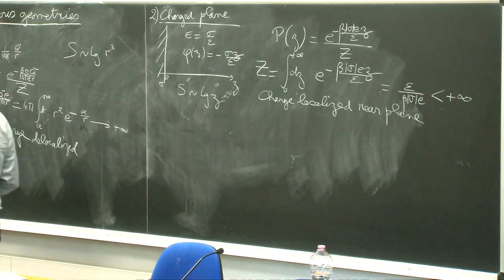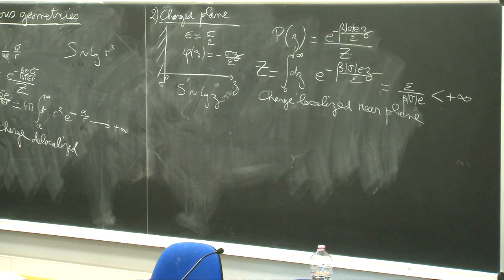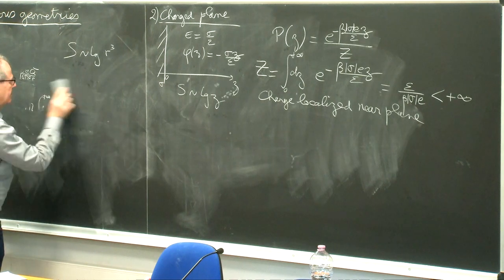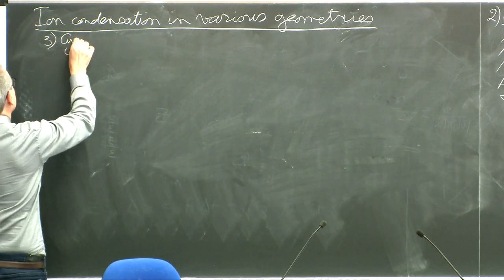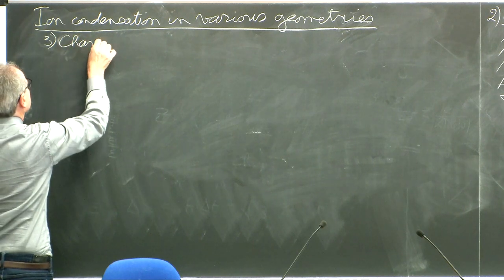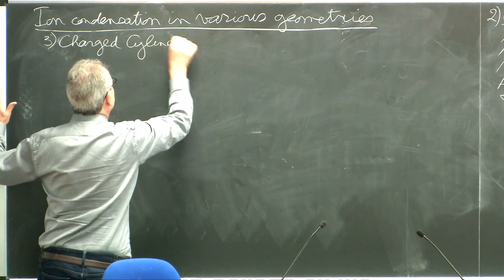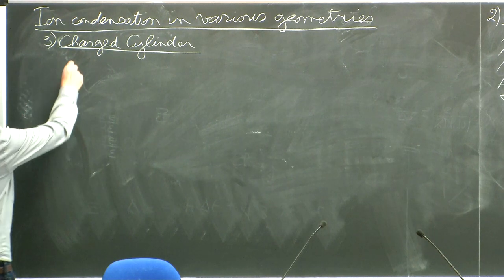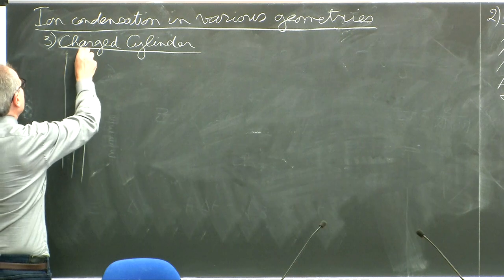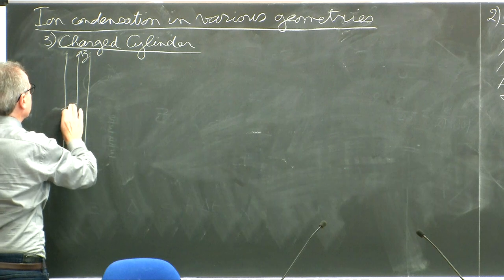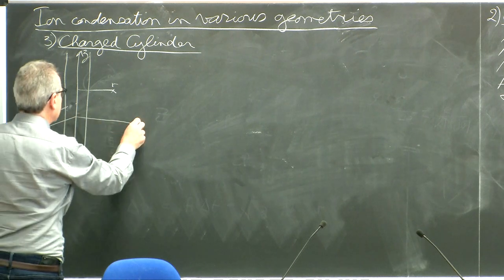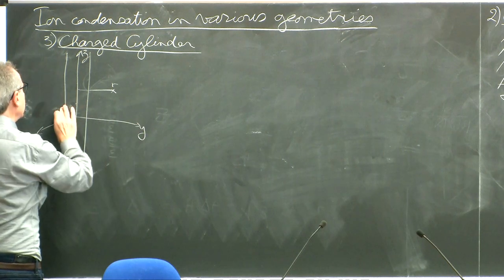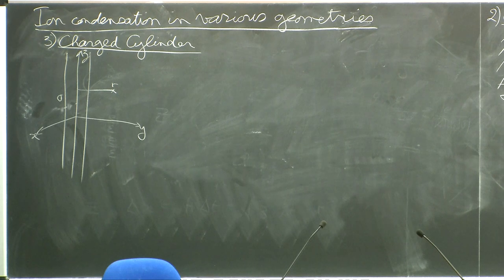This is simple enough. Now we come to the intermediate case, which is the most interesting, which is the cylindrical case. For the charged cylinder, take the axis as z and the radial coordinate r. The charge density is sigma. To calculate the electric field at distance r, you use the Gauss theorem: the flux of E equals the total charge Q inside divided by epsilon.